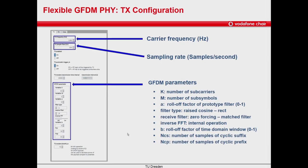Let's start with the TX tab. Here we need to select the transmit carrier frequency in Hz. Our license allows us to transmit at 1.99 GHz. If you are running this project with antennas, please make sure that you are in compliance with all local laws. We also need to set a sampling rate in samples per second — we will set it to 10 MHz.